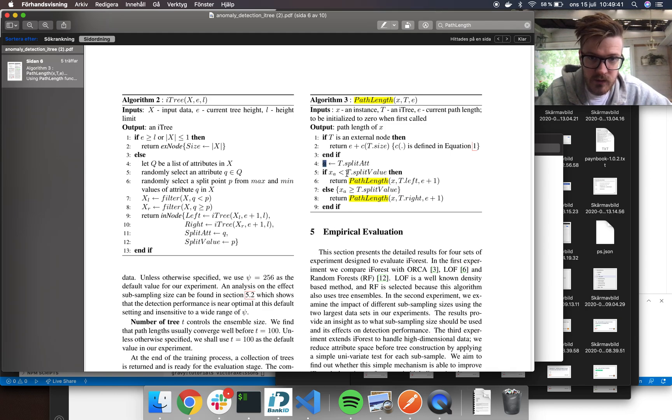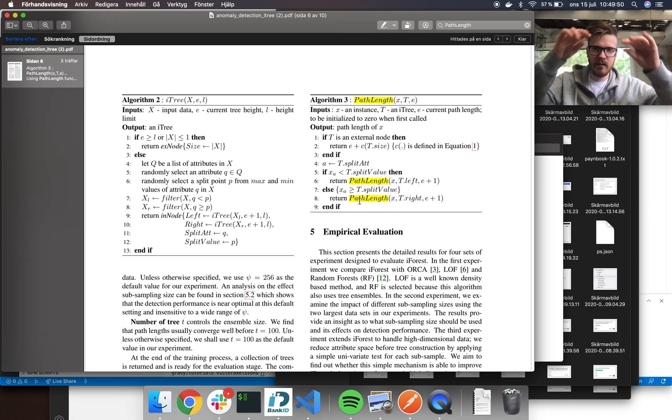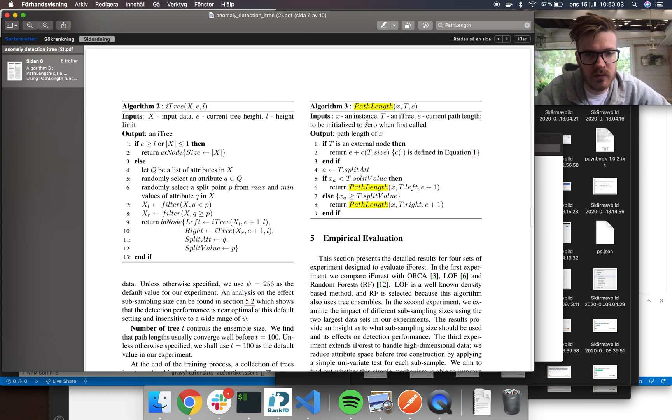Then you check the value that's split on, and then you recursively do this on all the sub paths, like a tree almost. So you can think of it as a tree like going like this on all the different branches until you reach your node. And that thing you use to calculate the path length, and then you can just iterate over all the nodes to calculate their score.